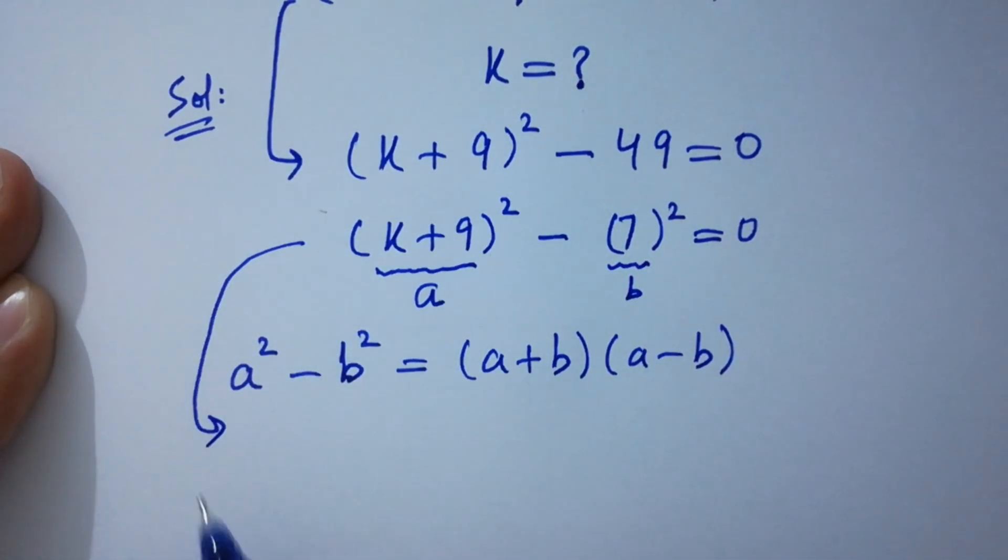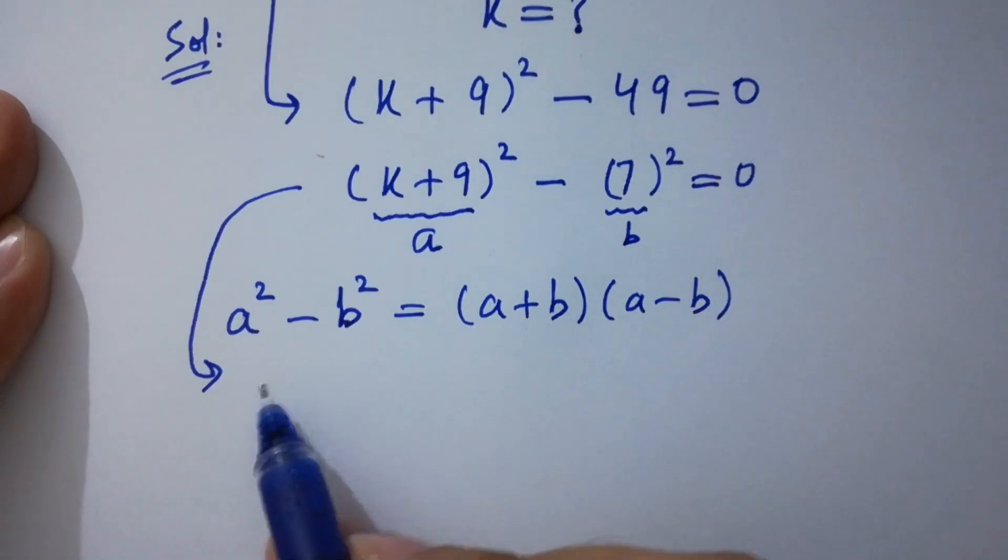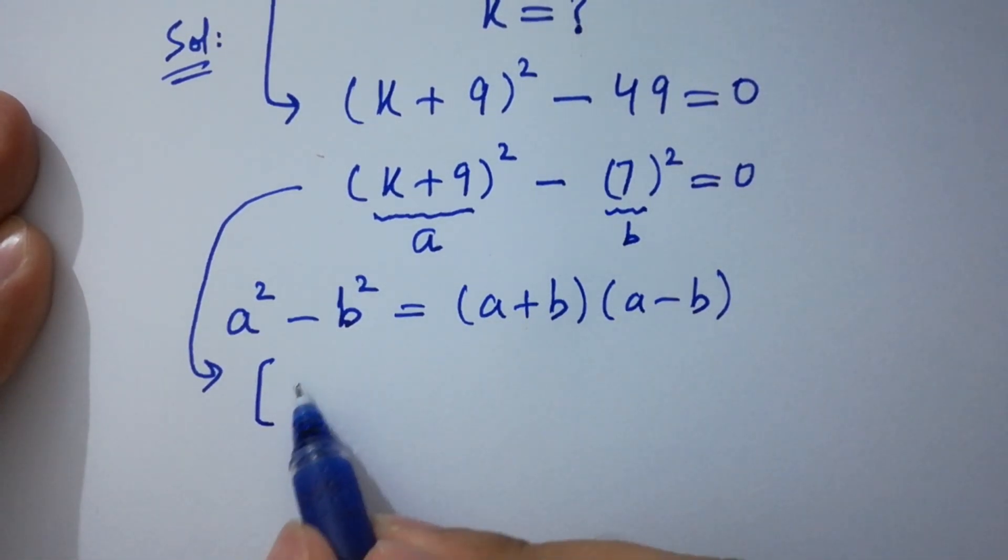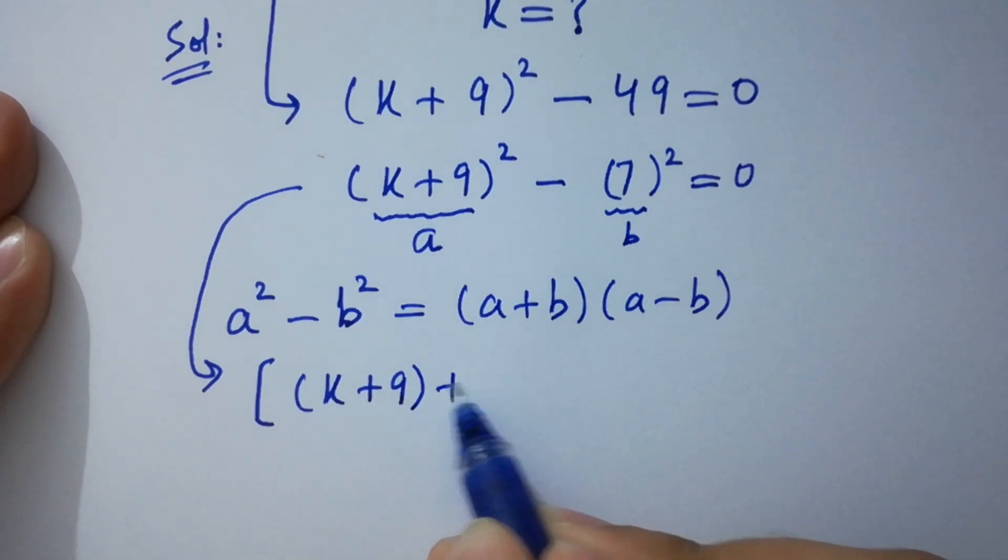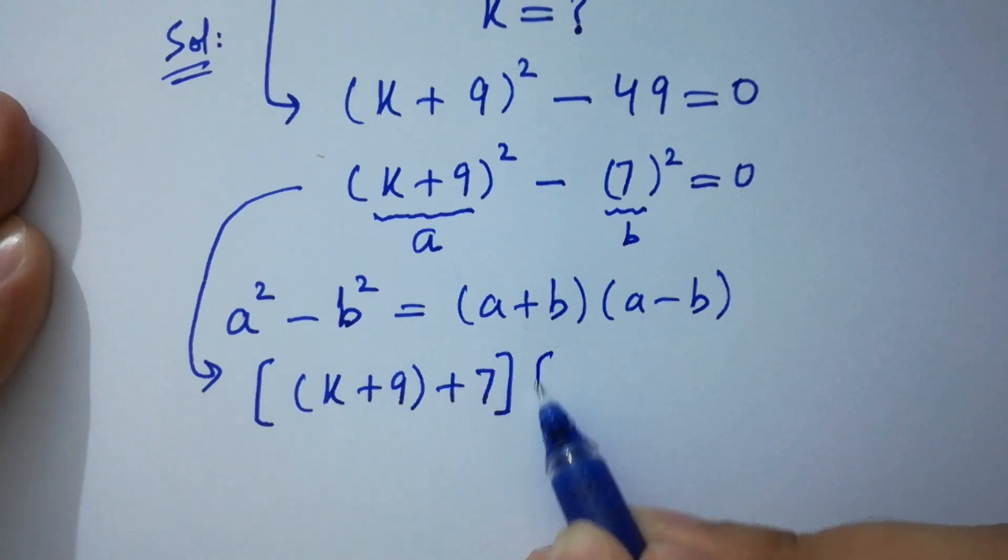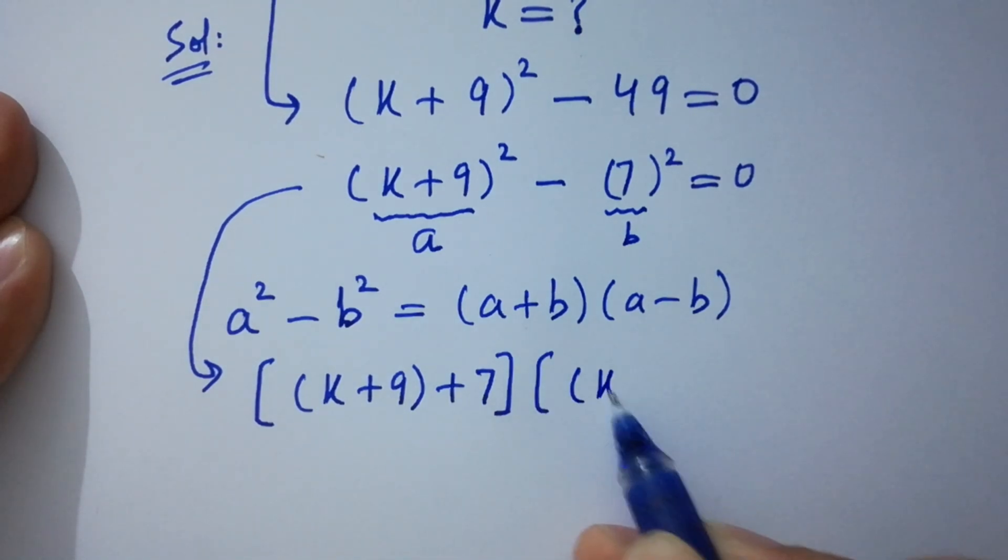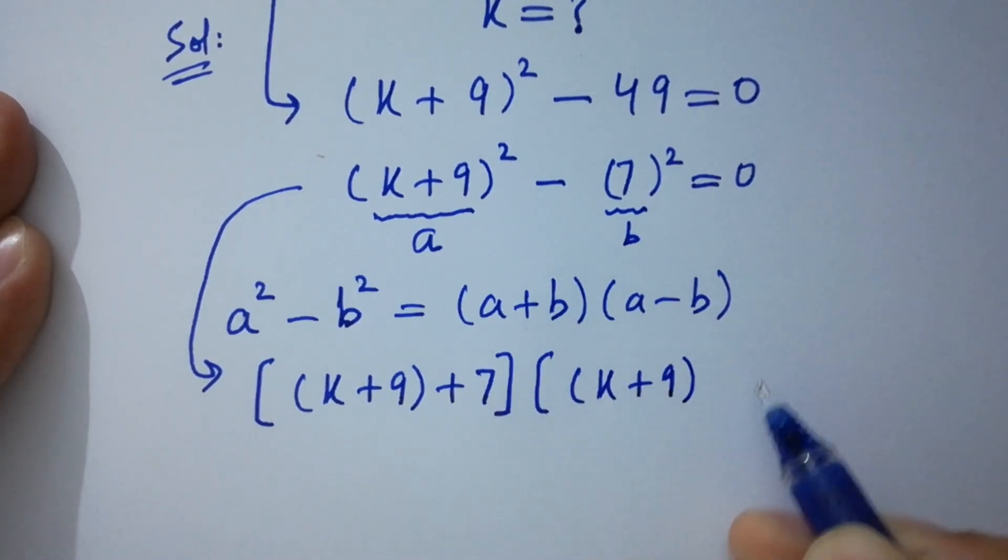Apply this formula. Now we have here (k + 9 + 7) like a + b and (k + 9 - 7) like a - b equal to 0.